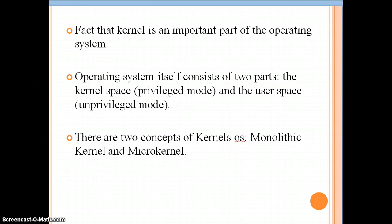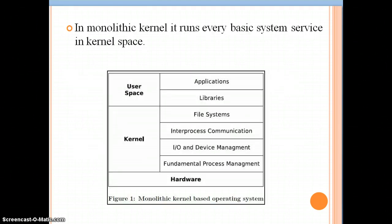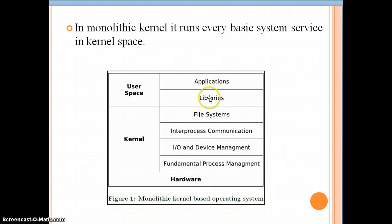In this section we will see what is meant by the monolithic kernel and the micro kernel, and how they are combined to make the hybrid operating system. This is the basic structure of the monolithic kernel based operating system. A monolithic operating system runs every basic system service in the kernel space. As shown in the diagram, the user space and the kernel space are shown, with the hardware below. In the user space, only the application programs and library functions are present.